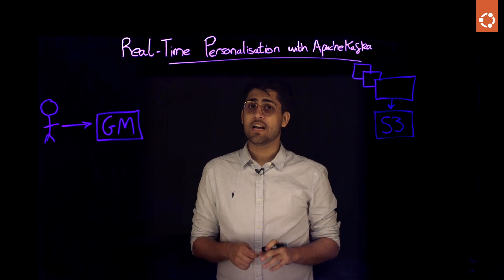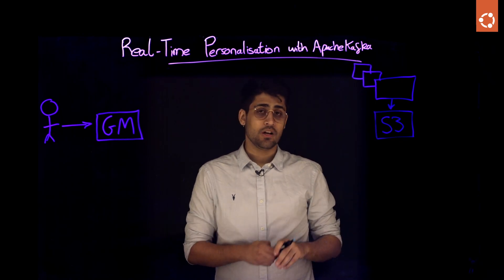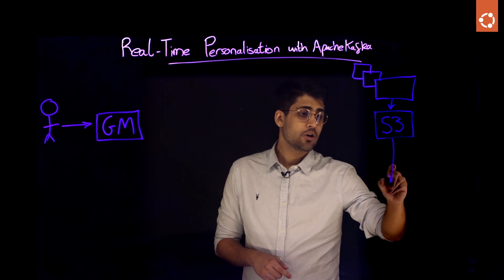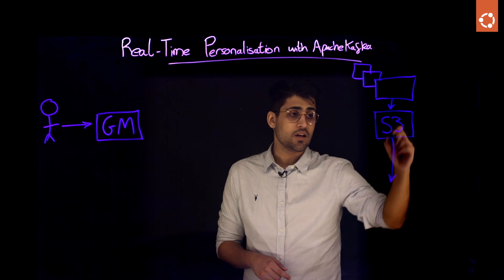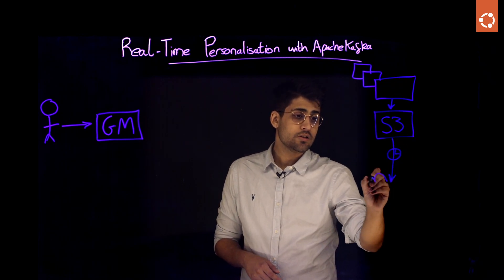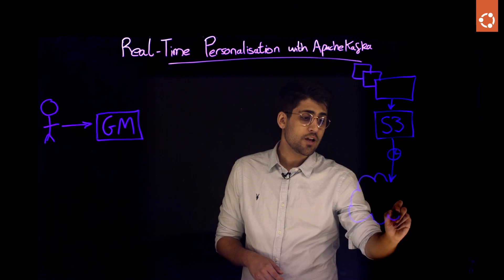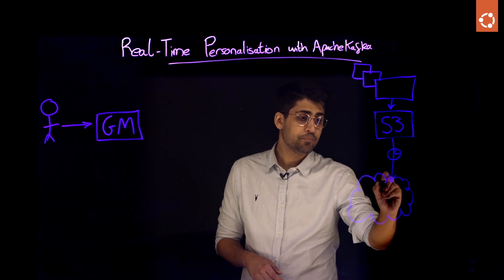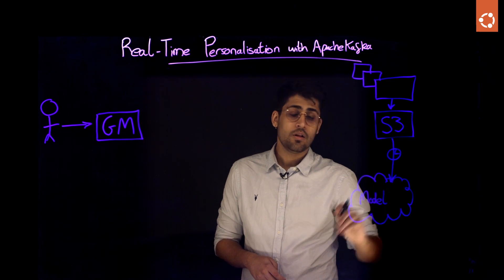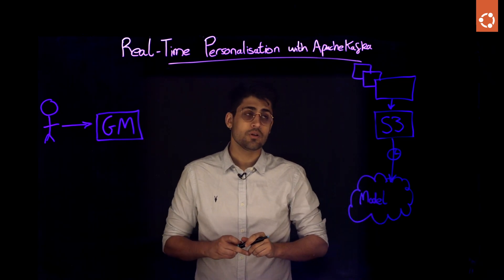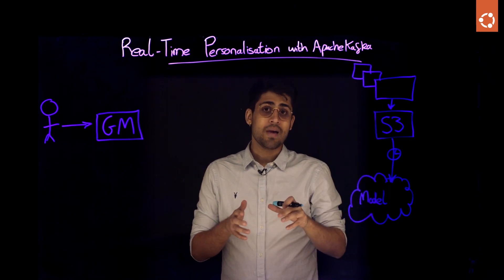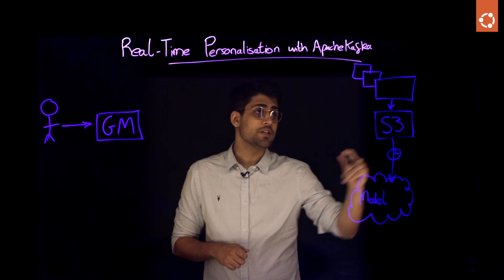You have a very talented and active machine learning team working with you. Every week, they take the full content metadata store that you have and on a batch job, they build a content-to-content recommendation model. What is that?